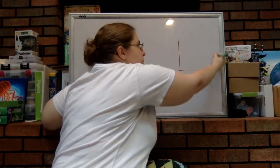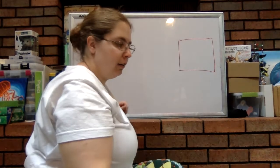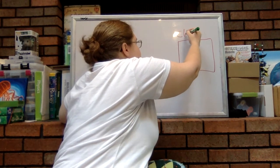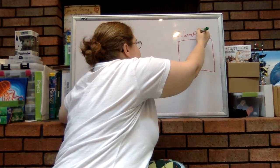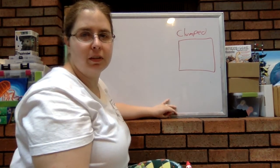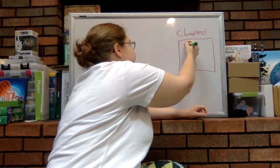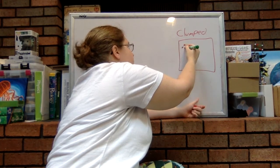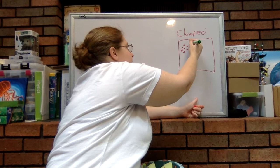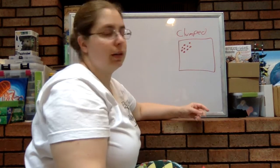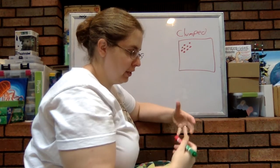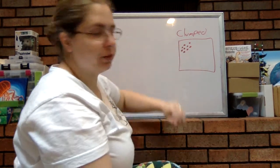The first one is clumped dispersion. And what we tend to see with clumped dispersion is that all the individuals tend to be grouped in one area or in one spot of their area or in one location within their territory.